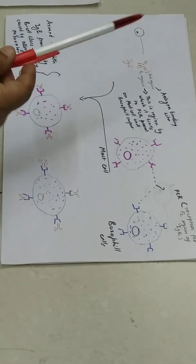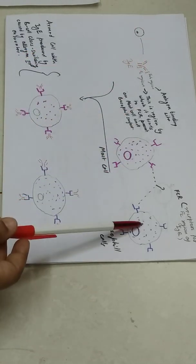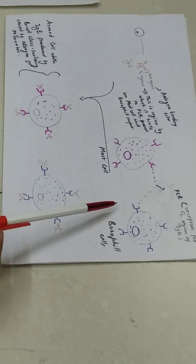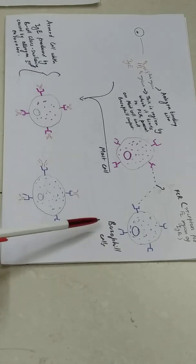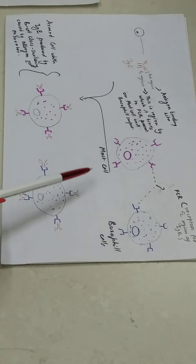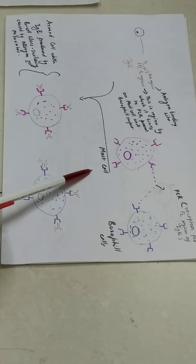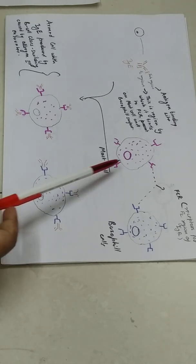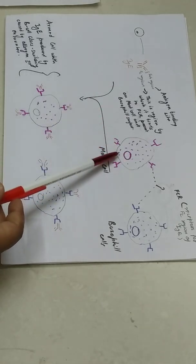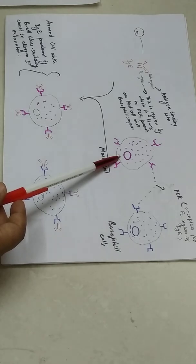Now, beside IgE there are other important cells which play major role in Type 1 hypersensitivity. And these cells are mast cells, basophil cells, eosinophil cells. I have taken mast cells and basophil cells. Mast cells are very very important. What are mast cells? Mast cells are cell factories of chemical mediators. Many chemical mediators are synthesized and stored inside the mast cells. And these mediators cause inflammation. These are inflammation mediators.